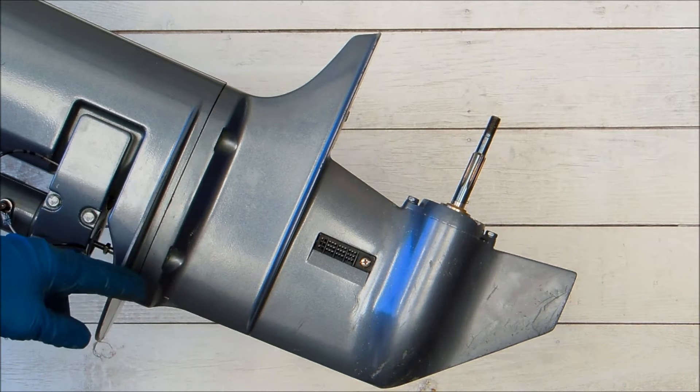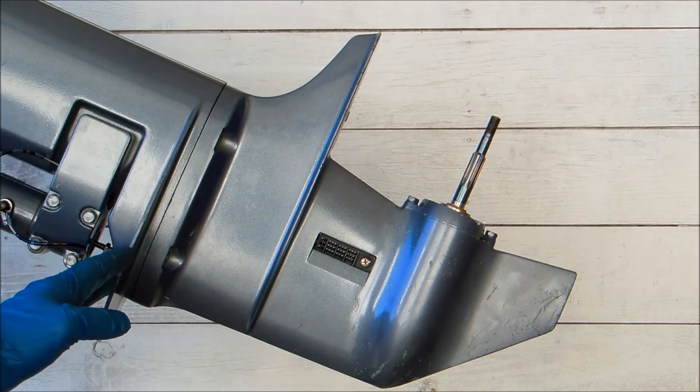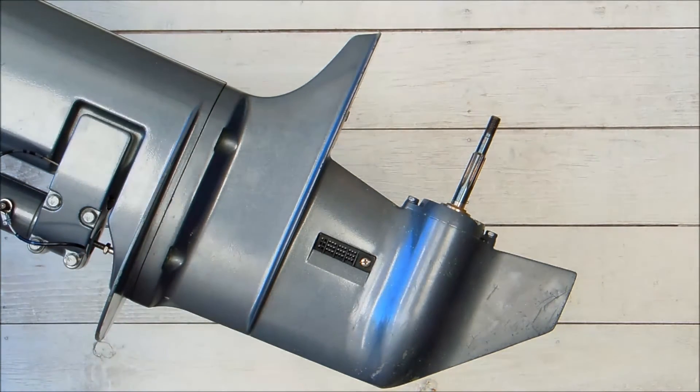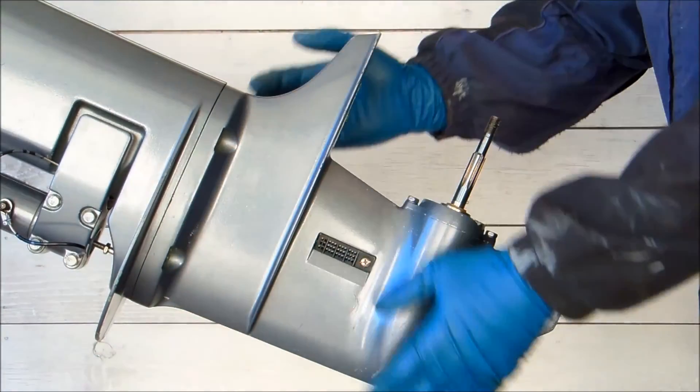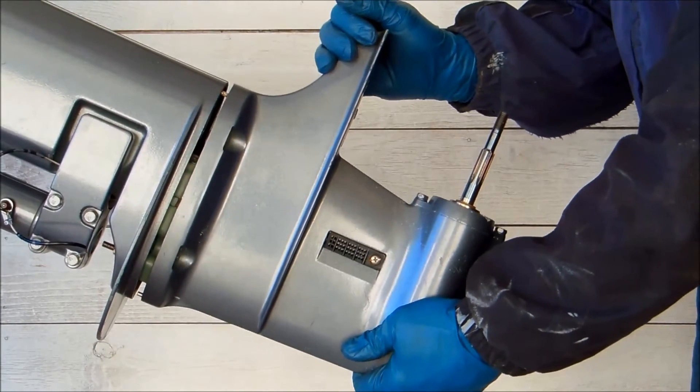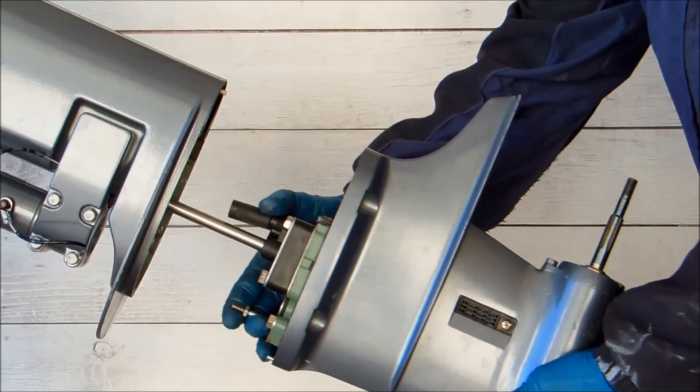The next step is to simply remove the bolts that attach the lower unit casing to the upper shaft and pull the lower unit free. I've already removed these bolts. It's ready to come out. Just work it a little bit and it should slide right on out.